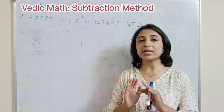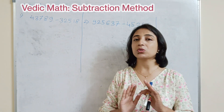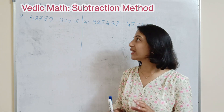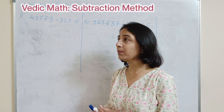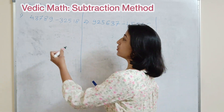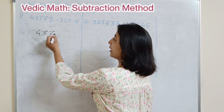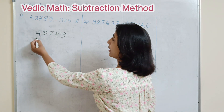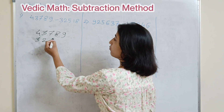Today we are discussing subtraction using Vedic Maths. The specialty of Vedic Maths subtraction is that we do not need to borrow a number at the time of subtraction. Let's understand this through an example. The question is 43789, and we have to subtract 32518.